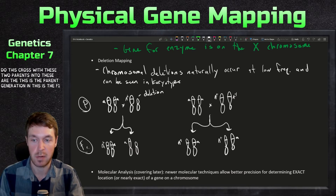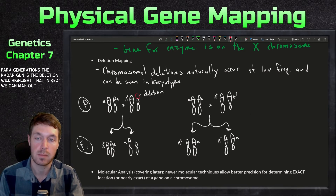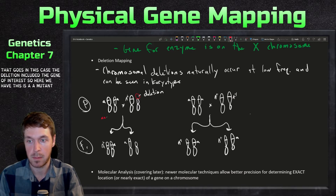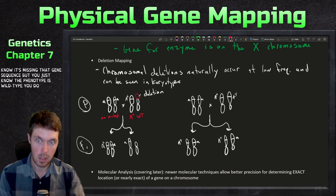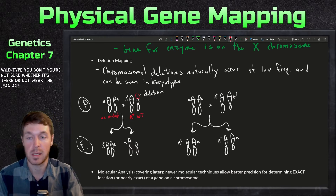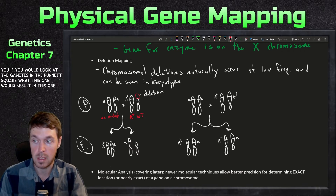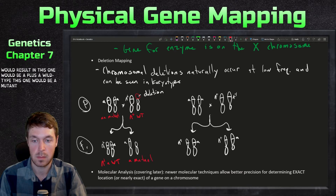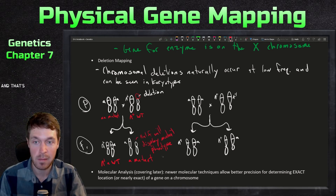In deletion mapping you look at when a region is deleted. In this cross, the parent generation has a deletion in one chromosome — highlighted here — that includes the gene of interest. One parent is a mutant (aa) and the other is a wild-type, but from the karyotype you know a sequence is missing. You want to determine whether gene A is located within the deletion region. Looking at the Punnett square for the F1 generation, one outcome is wild type and another is mutant.